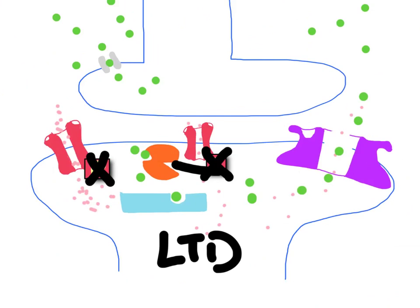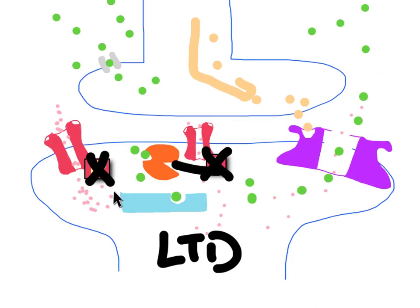Therefore, if you have many small stimuli coming down — small stimuli leading to just a very small release of glutamate and a small influx of calcium — it will actually activate the phosphatases rather than the kinases. But if there is enough calcium, the kinases will have enough to take over, and because they are more active they will overpower the phosphatases, leading to long-term potentiation.